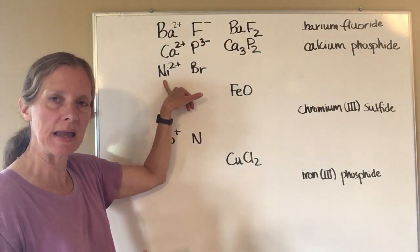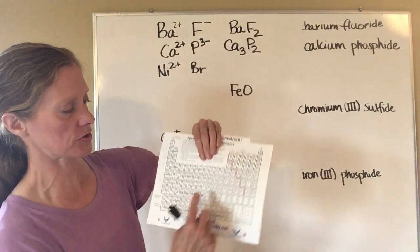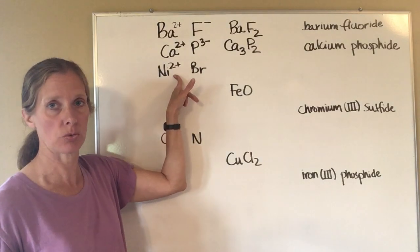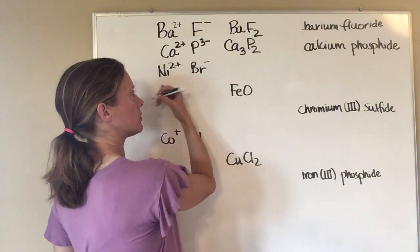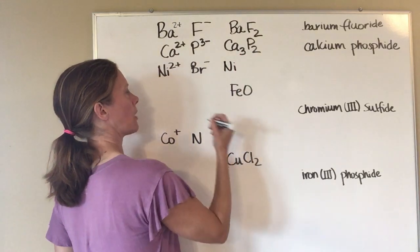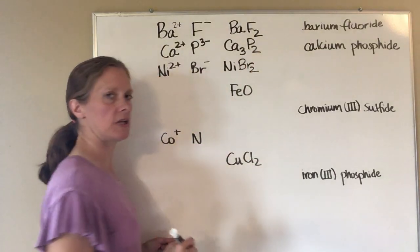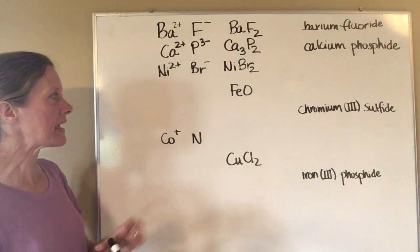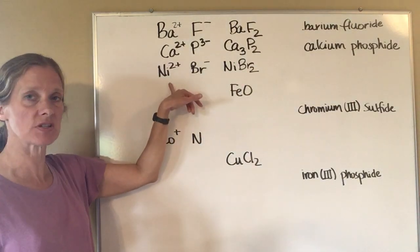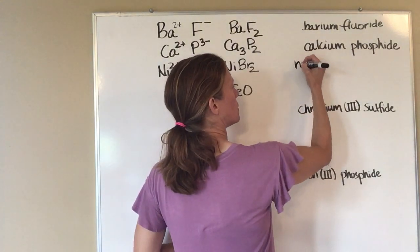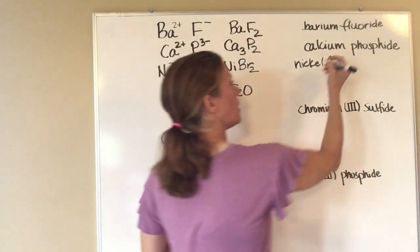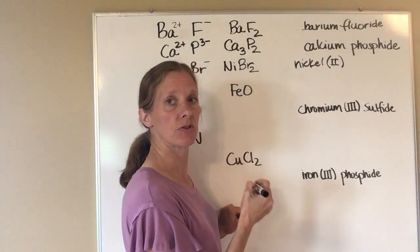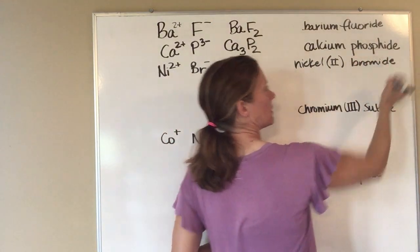Nickel is one example — you can't look at the periodic table and determine its charge because it's in the transition metal block. So I'm telling you the charge on this nickel is positive two. Bromine, from the periodic table, has a negative one charge. To balance, I need two bromines for every nickel. When naming it, you can't just say 'nickel bromide' — you must include the charge in parentheses as a Roman numeral: nickel(II) bromide.